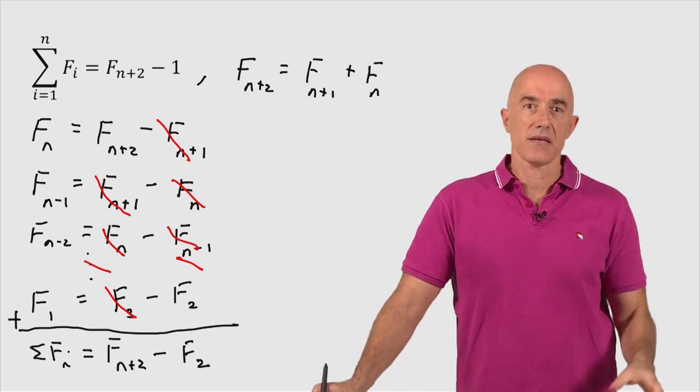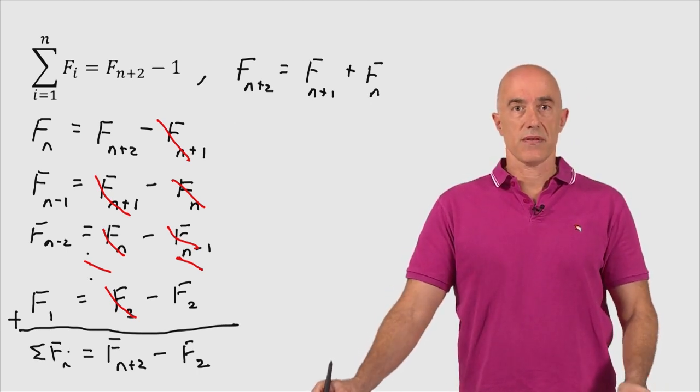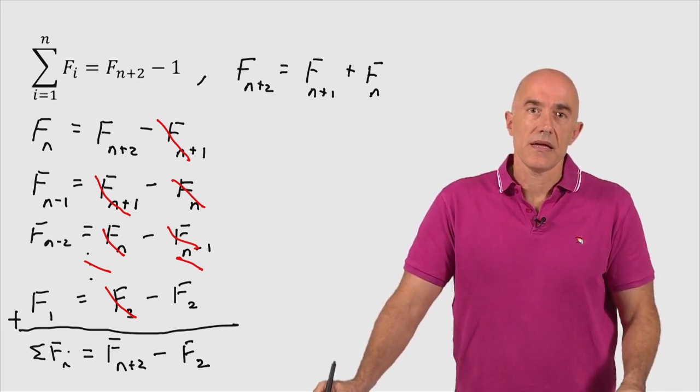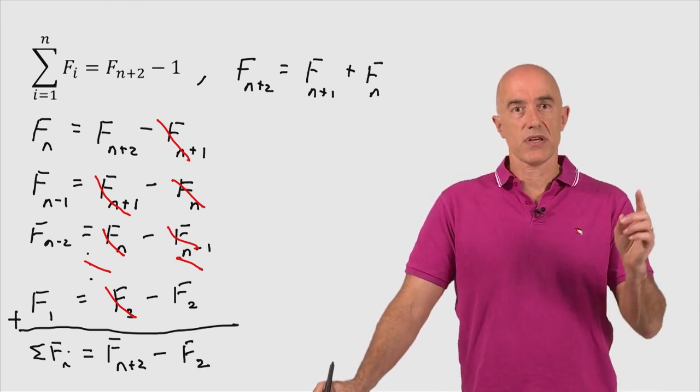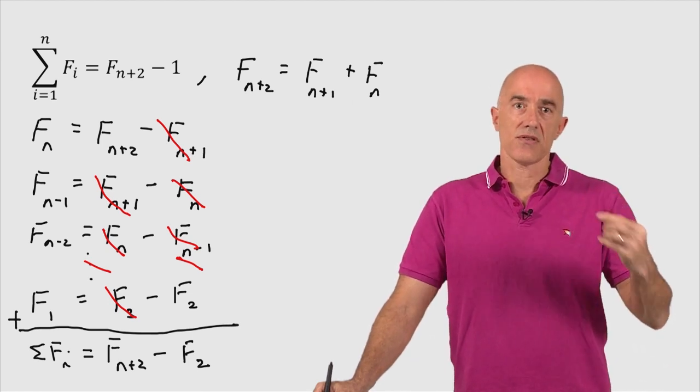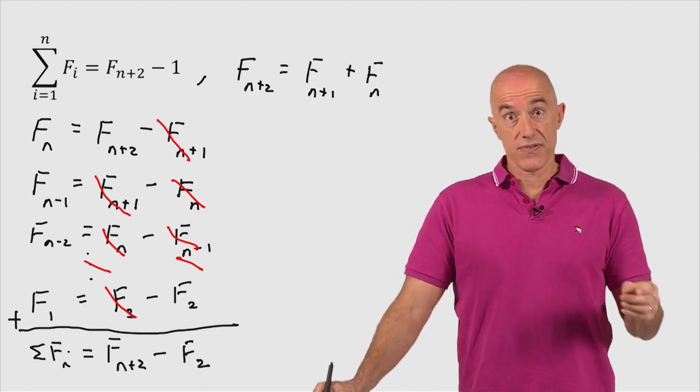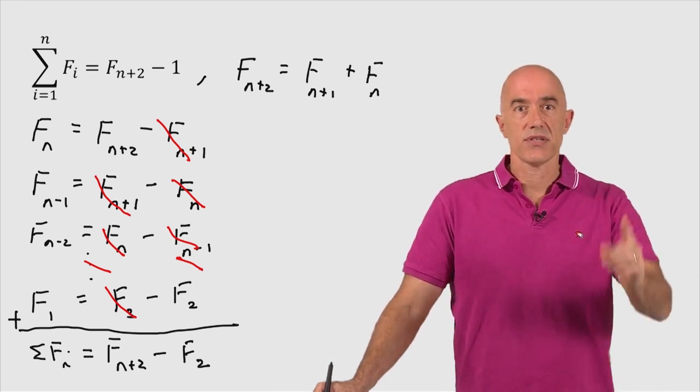So by making this list then, we've managed to prove the identity, okay? In the next lecture, I want to kick it up a notch. Instead of looking at the sum over the Fs, let's look at the sum over the F squares. Okay, the sum over the F squares. I'll see you next time.